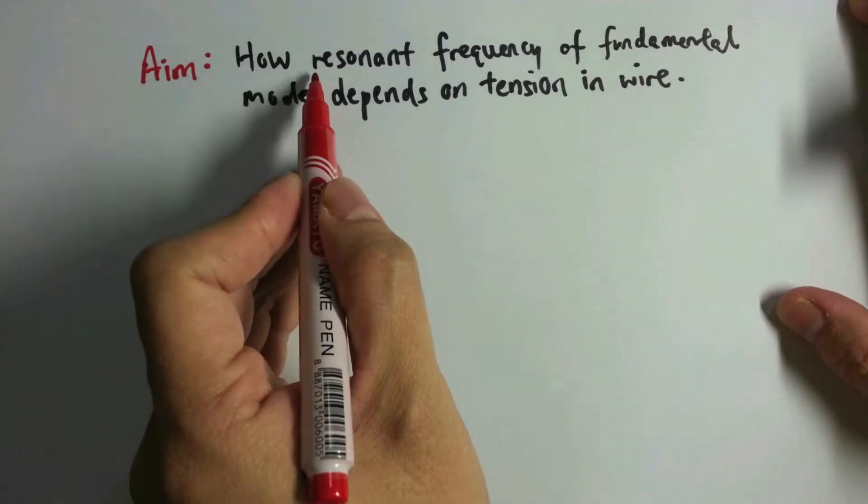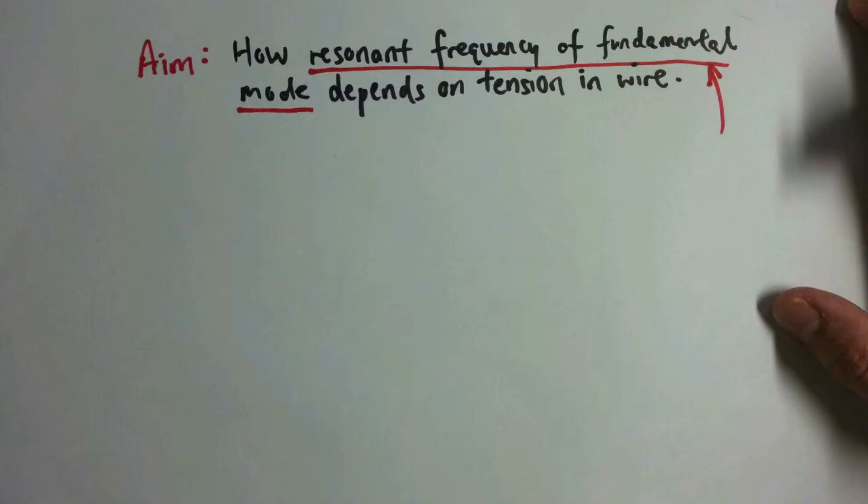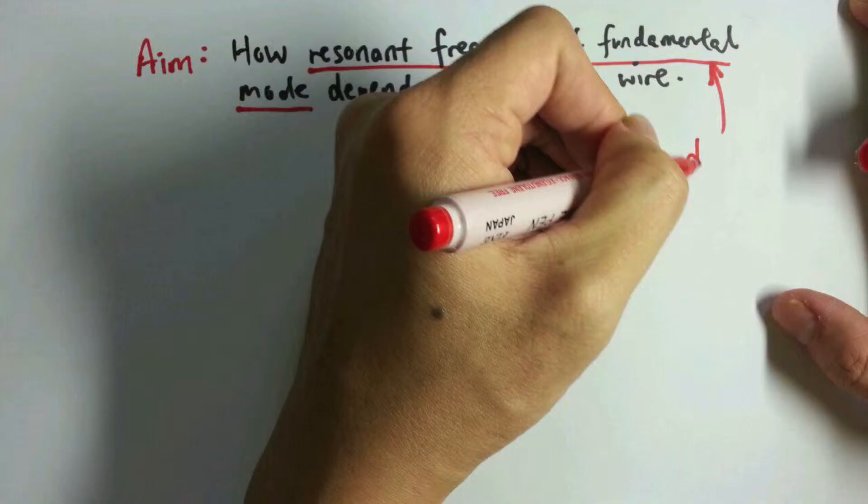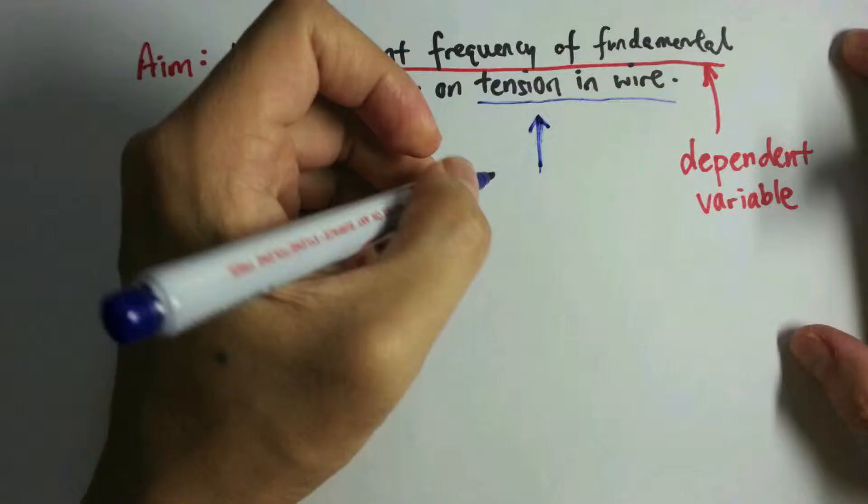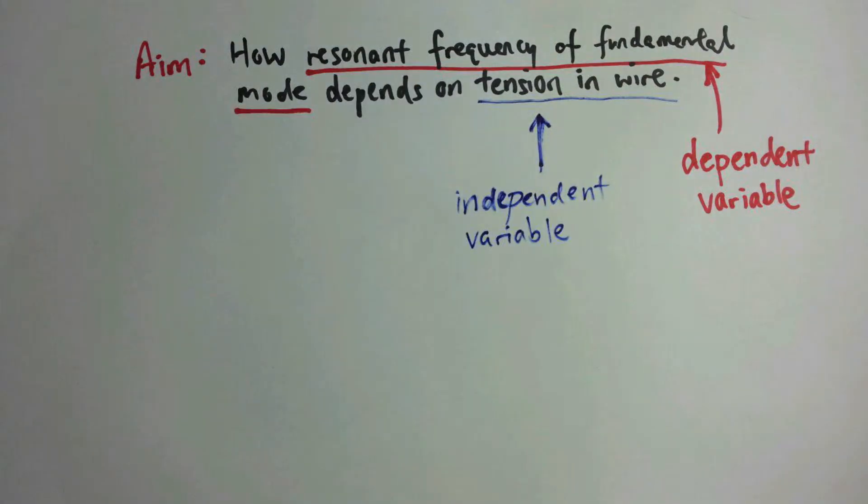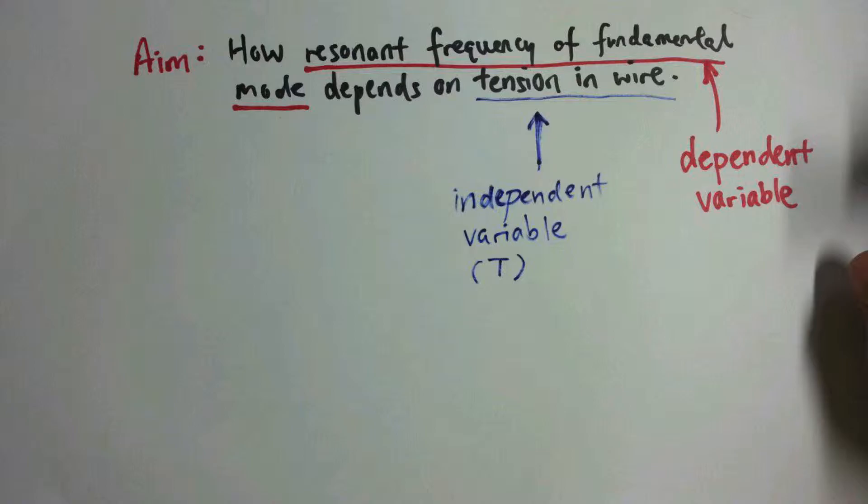The dependent variable is the resonant frequency of the fundamental mode in the wire. The independent variable is the tension in the string, which can be varied by hanging masses at one end of the wire and dangling that end over the edge of a table on a pulley. The tension is represented by the symbol T.